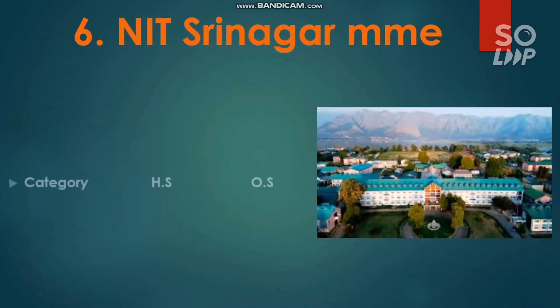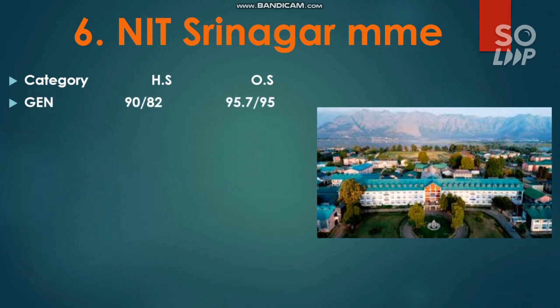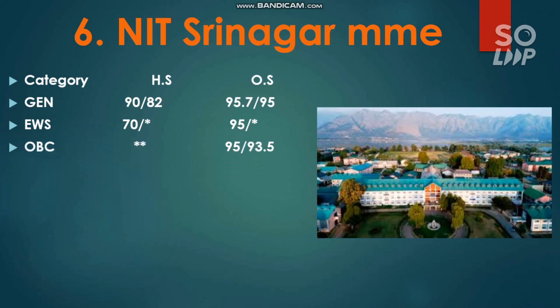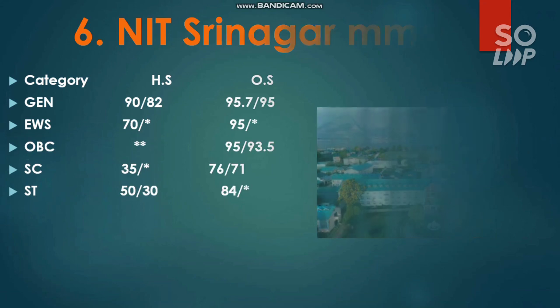The next one is NIT Nagpur, where Material and Mining Engineering have the lowest cutoff. For General: 95.7 and 95 percentile. For EWS: 95 percentile. For OBC: 95 and 93.5 percentile. For SC: 76 and 71 percentile. For ST: 84 percentile. Once again, if you are from home state, check the home state cutoff separately.